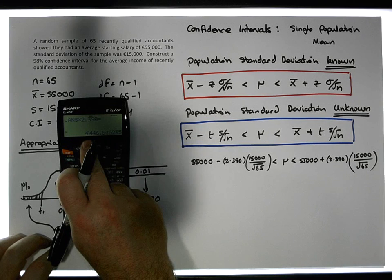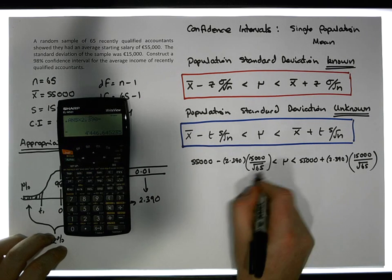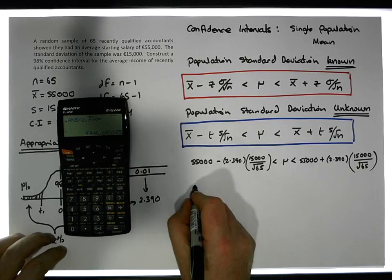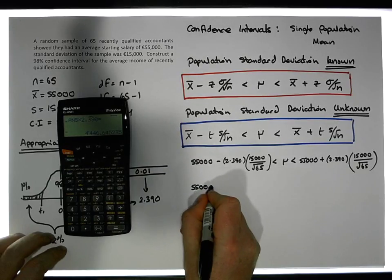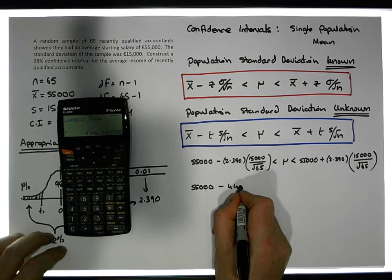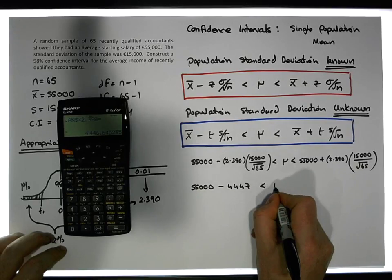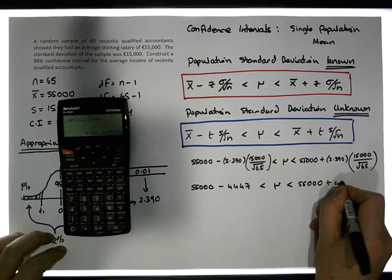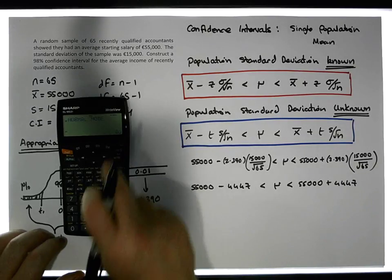This value here is approximately 4,447. Now we have 55,000 euros minus 4,447 must be less than μ, which must be less than 55,000 plus 4,447.